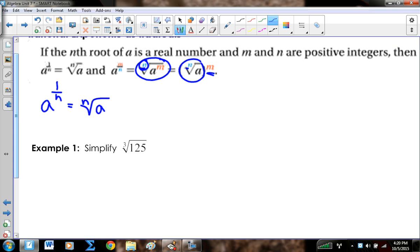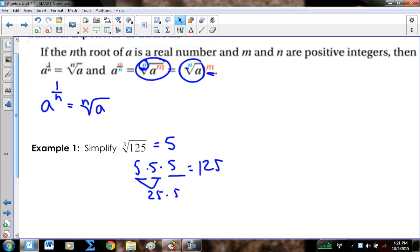All right, so the cube root, the third root of 125, one number that multiplies by itself three times to give me 125. And you can do trial and error. Now it ends in a 5, so I'm pretty sure this is going to be 5. And you look, 5 times 5 is 25, and 25 times 5 is 125. So the fifth root, or sorry, the third root of 125 is 5.